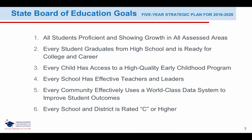Our State Board of Education has a five-year strategic plan, which includes the following goals: all students proficient and showing growth in all assessed areas; every student graduates from high school and is ready for college and career; every child has access to a high-quality early childhood program; every school has effective teachers and leaders; every community effectively uses a world-class data system to improve student outcomes; and every school and district is rated C or higher.